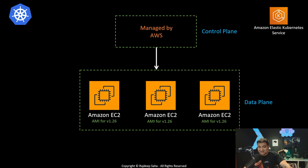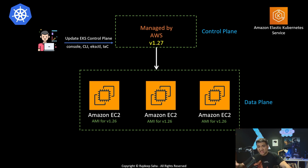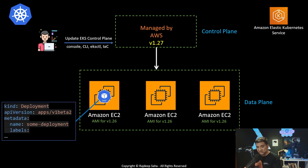How do you upgrade and what does it mean? A system admin can update the EKS control plane, which changes the Kubernetes version. You can do this using the console, CLI, eksctl, or any infrastructure-as-code tool. At that point the control plane is running version 1.27, but the worker nodes can still run AMIs two versions behind the control plane, so you can keep running EC2 worker node AMIs for version 1.26.